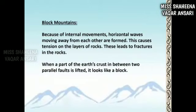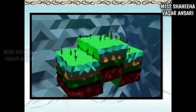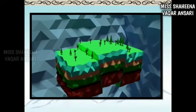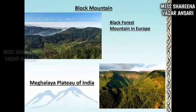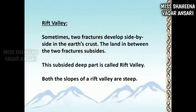Before understanding block mountains, note that displacement of rock upward or downward from the original position along a fracture is termed faulting. Faulting results in the formation of block mountains and rift valleys. A block mountain is formed when the part of the earth's crust between two parallel faults is uplifted like a block. The hilltops of block mountains are flat. Examples include the Black Forest Mountain in Europe and the Meghalaya Plateau of India.